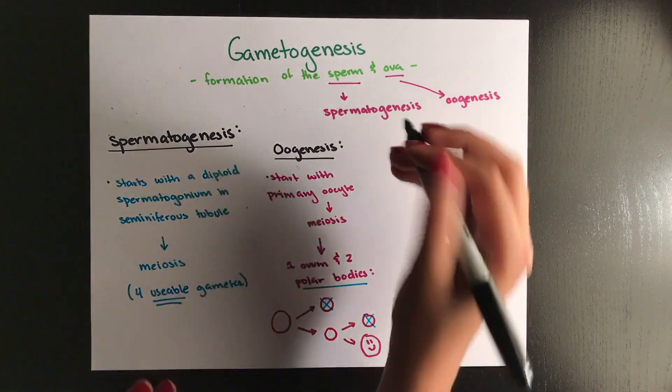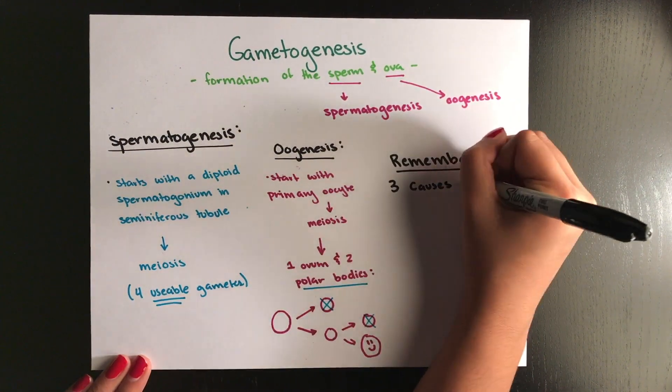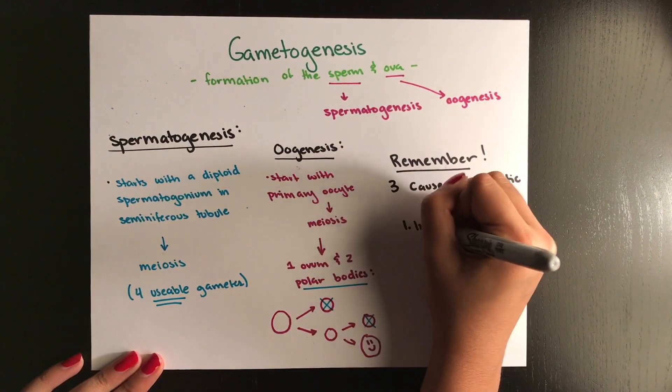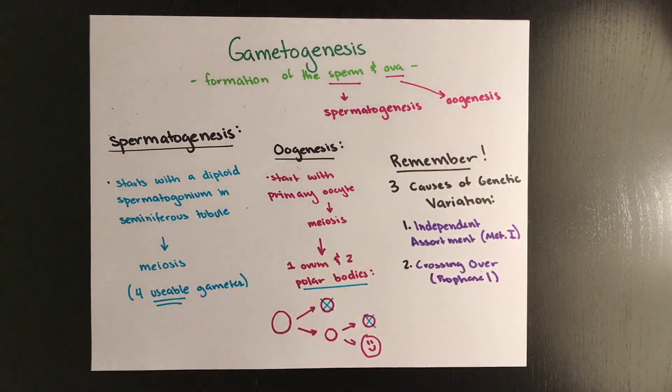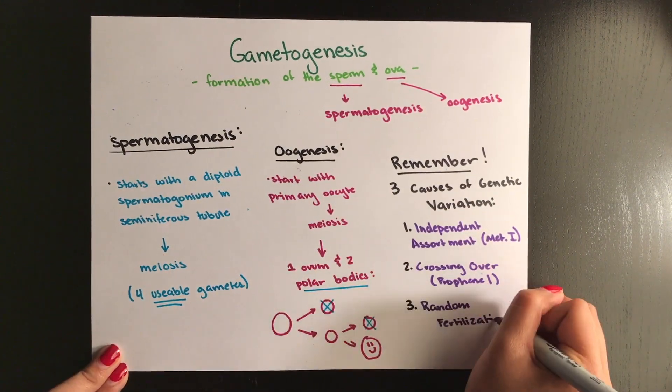It's also important to be familiar with the three causes of genetic variation. These are independent assortment during metaphase 1 of meiosis, crossing over, which occurs during prophase 1 of meiosis, and random fertilization.